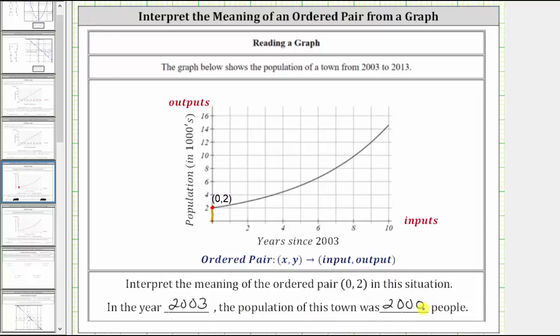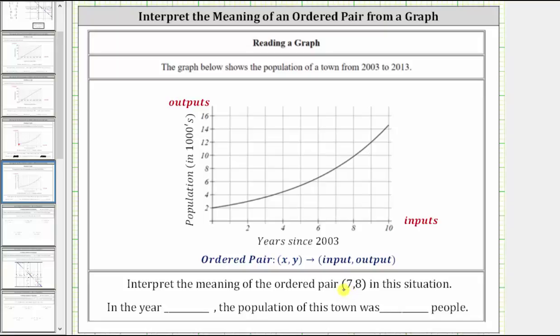Let's look at a second ordered pair using the same graph. Now we're asked to interpret the meaning of the ordered pair (7, 8) in this situation. Again, let's first locate the point on the graph.